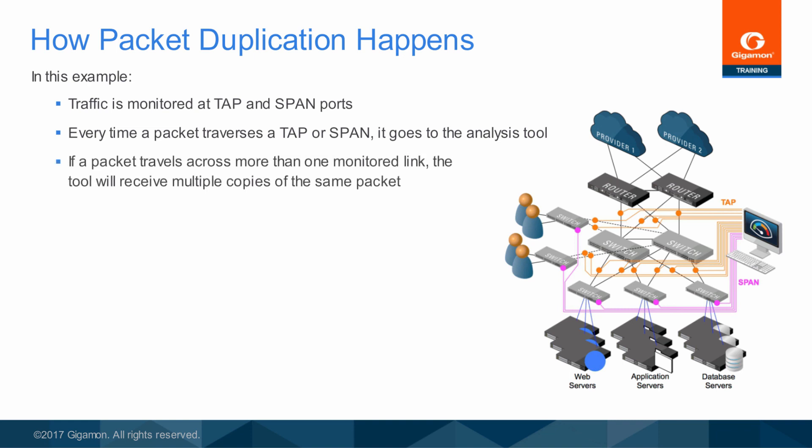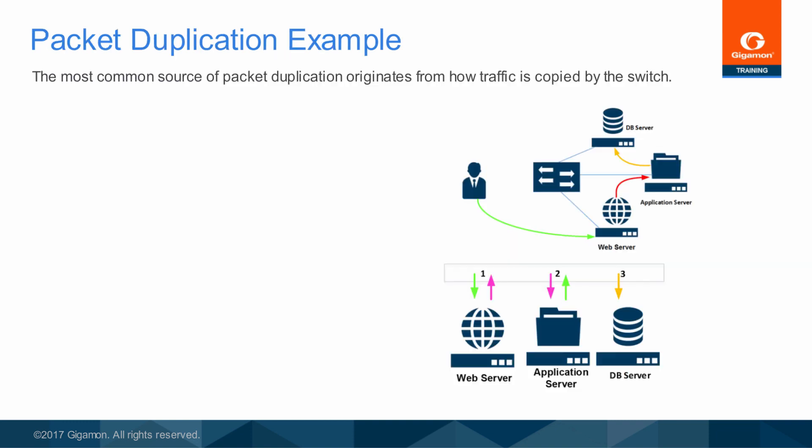If a packet happens to travel across more than one monitored link on the journey to its destination, then each tap or span will forward the packet to the tool. This means the tool will receive multiple copies of the same packet. The most common source of duplicate packets is in how span or mirror ports are configured.